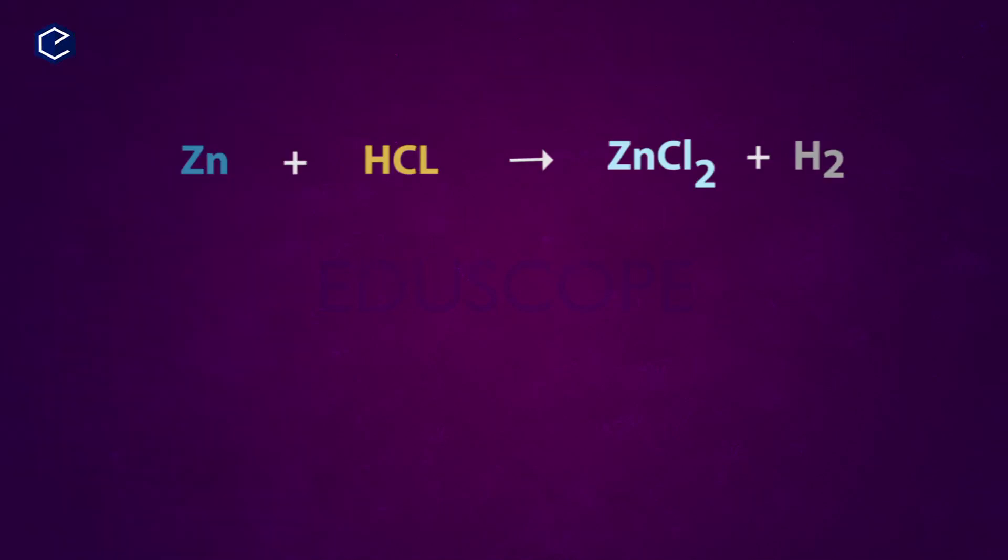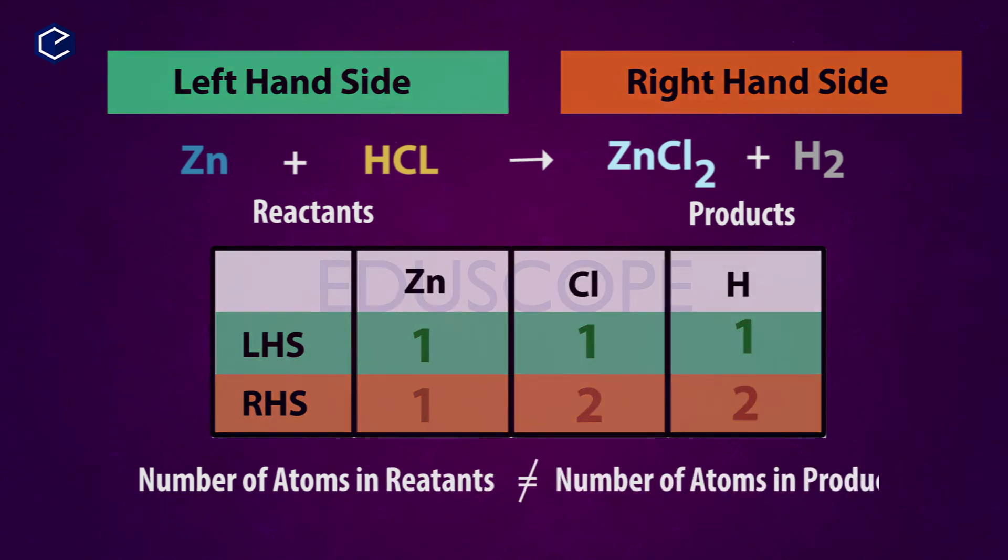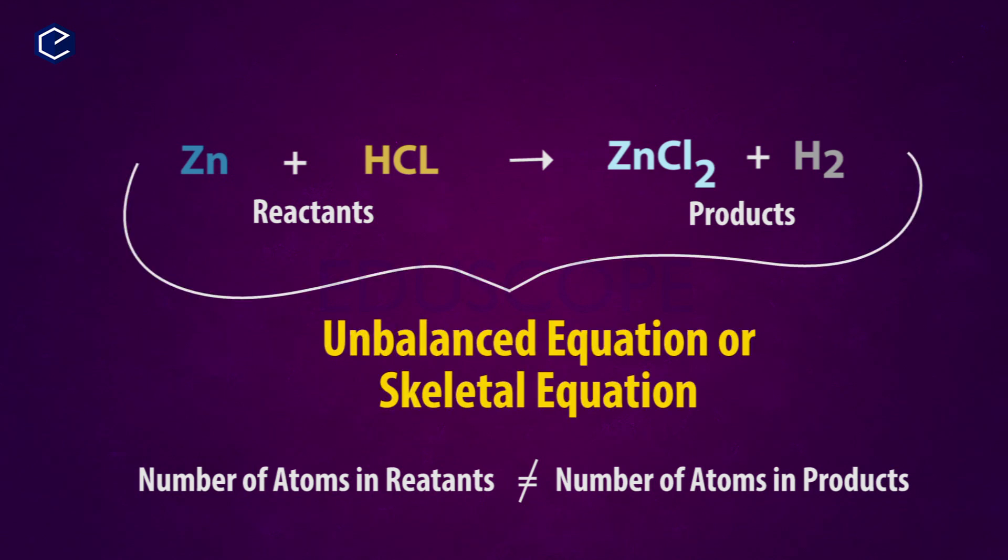When we write this chemical equation, we check from right-hand side to left-hand side whether the molecules and number of atoms are equal. Checking the reaction right-hand side and left-hand side: on the left there's one zinc atom, one hydrogen atom, one chlorine atom. On the right side there's one zinc, two chlorine atoms, two hydrogen atoms. So the number of atoms on the left-hand side and right-hand side are not equal. The number of atoms in reactants and products are not equal. Such an equation is called an unbalanced chemical equation or skeletal chemical equation. How to balance a chemical equation, we'll see in the next part.